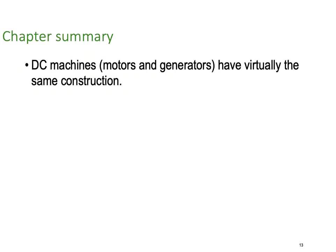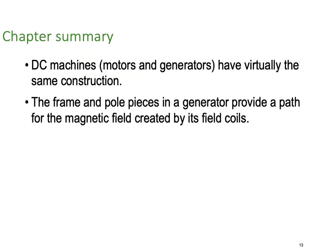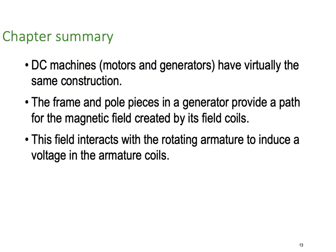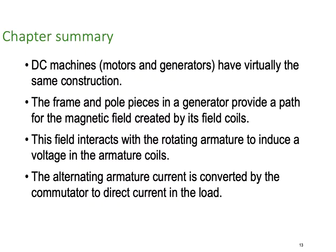Let's have a summary of the lesson. DC machines - motors or generators - have virtually the same construction. A generator can be a motor and a motor can be a generator in the DC world. The frame and pole pieces provide a path for the magnetic field created by the field coils. The field interacts with the rotating armature to induce a voltage in the armature coils. The field creates a flux and the armature cuts the flux. The alternating armature current is converted by the commutator back to direct current. The commutator is a switch that keeps the current flowing in the same direction all the time.